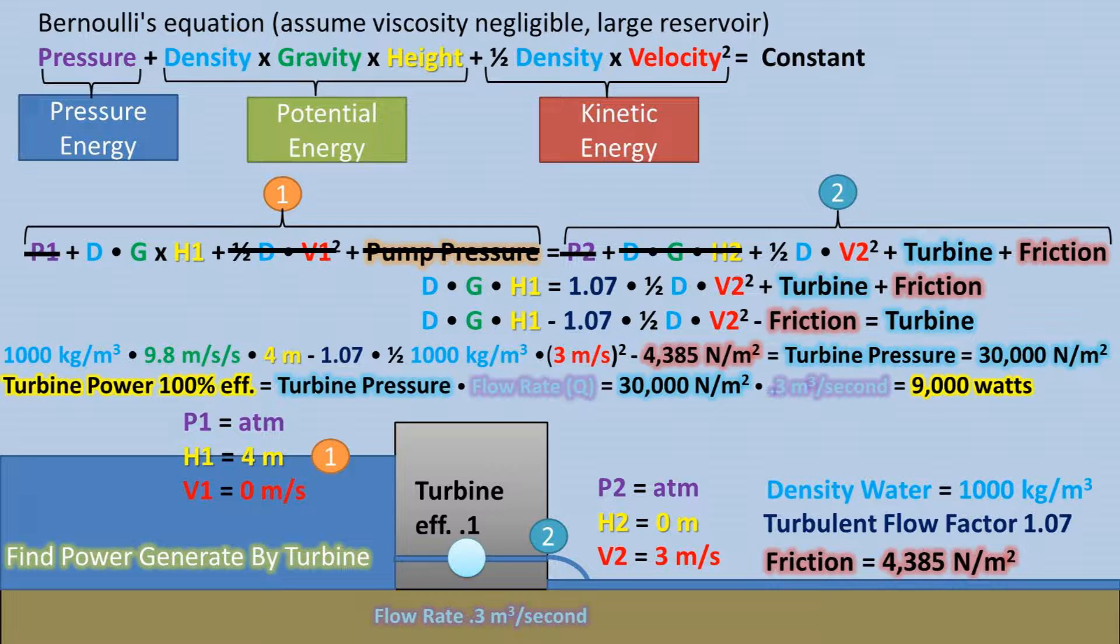Now, to get the power, we can multiply this value times the flow rate, and we get 9,000 watts of power. This is, of course, assuming 100% efficiency, which would be the case if we were in a perfect world. To get the actual energy, we must multiply times our efficiency of 10%, or 0.1. We get 900 watts of power this turbine can generate.